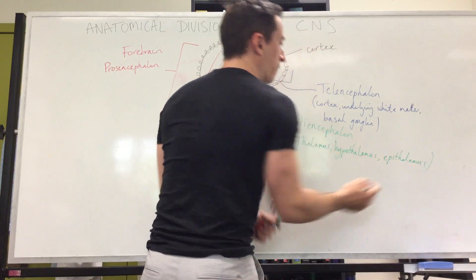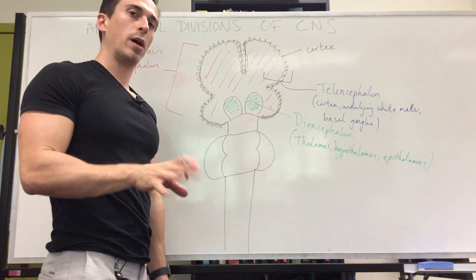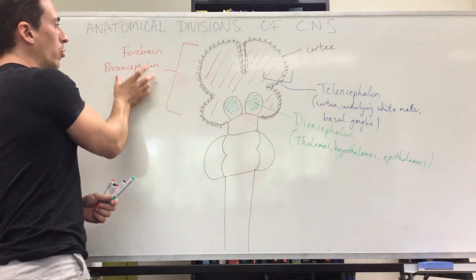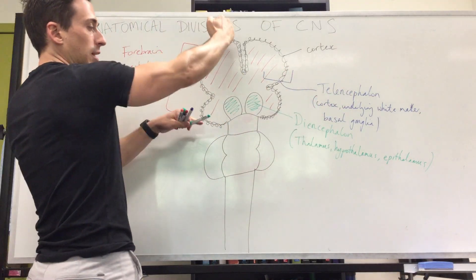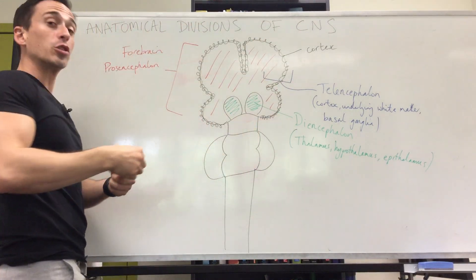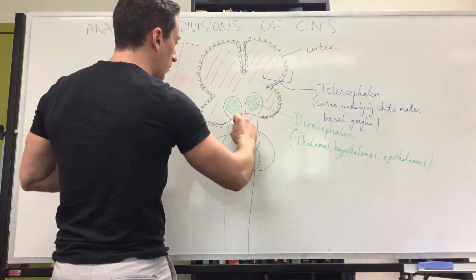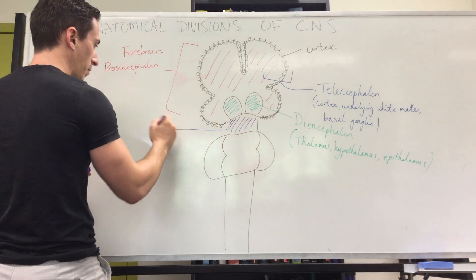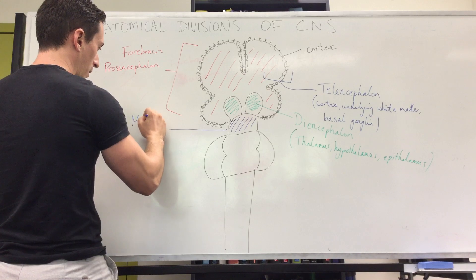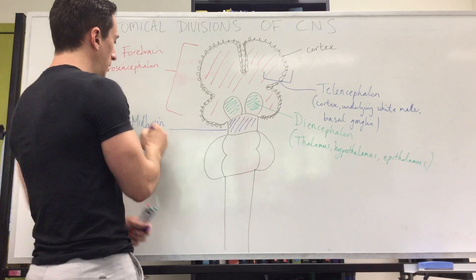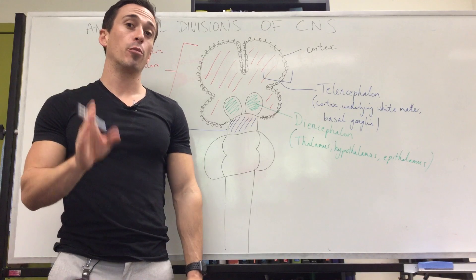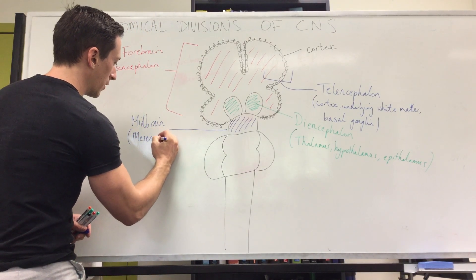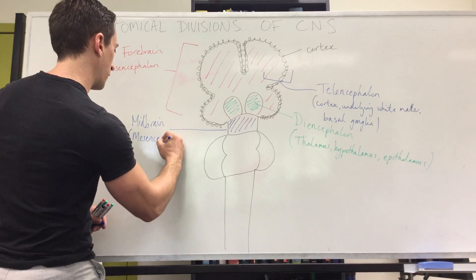We'll talk more about the functions of these anatomical parts in the future. Moving to the next part: the midbrain, which is the most superior aspect of the brain stem. It's also termed the mesencephalon.